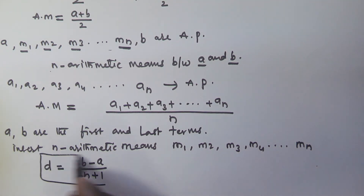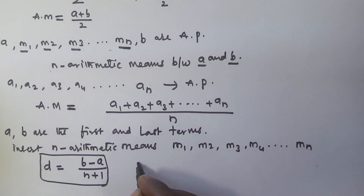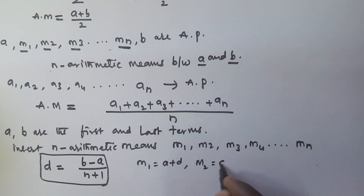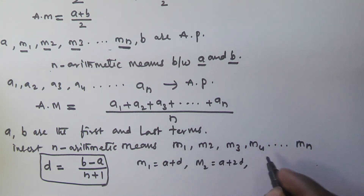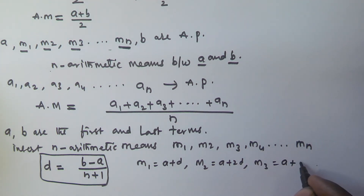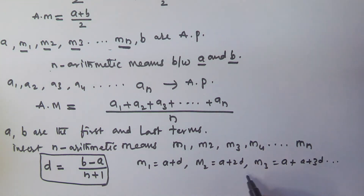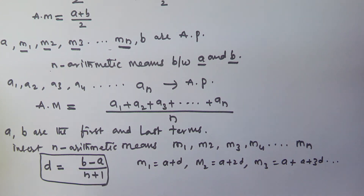When we get the common difference d, then m1 = a + d, m2 = a + 2d, and m3 = a + 3d, and so on, where the d value is given by d = (b - a) / (n + 1). Based on this we will solve one problem.